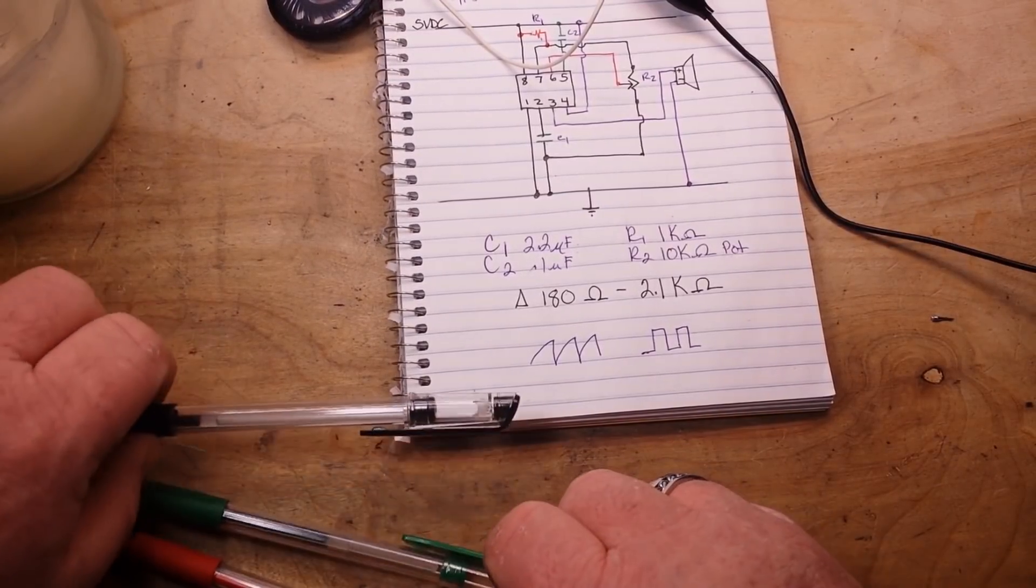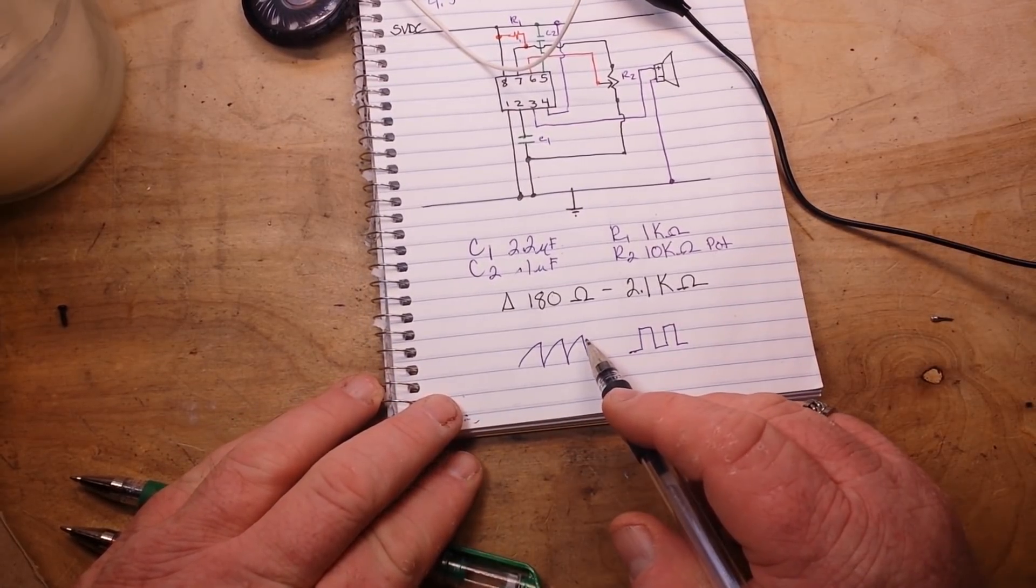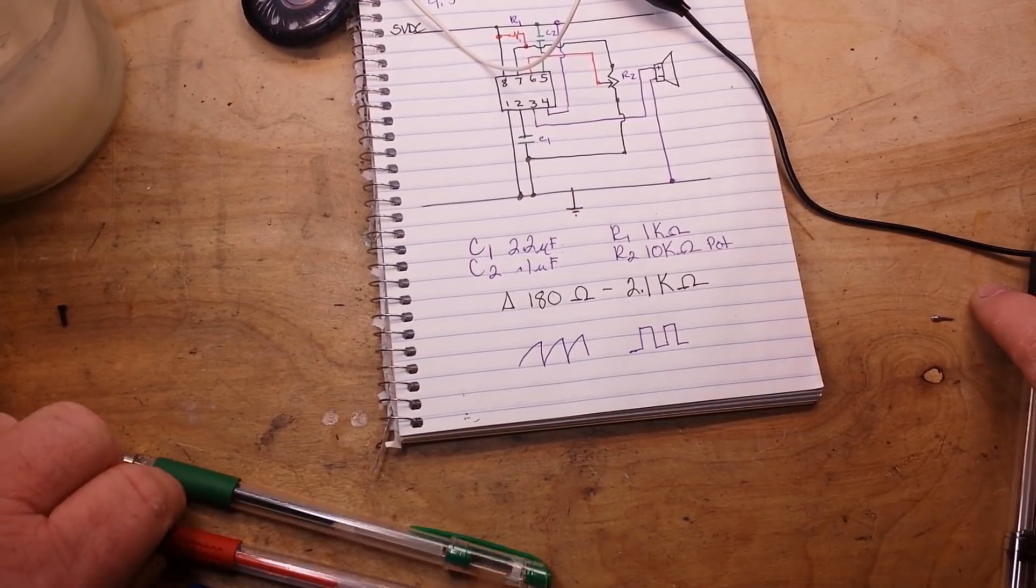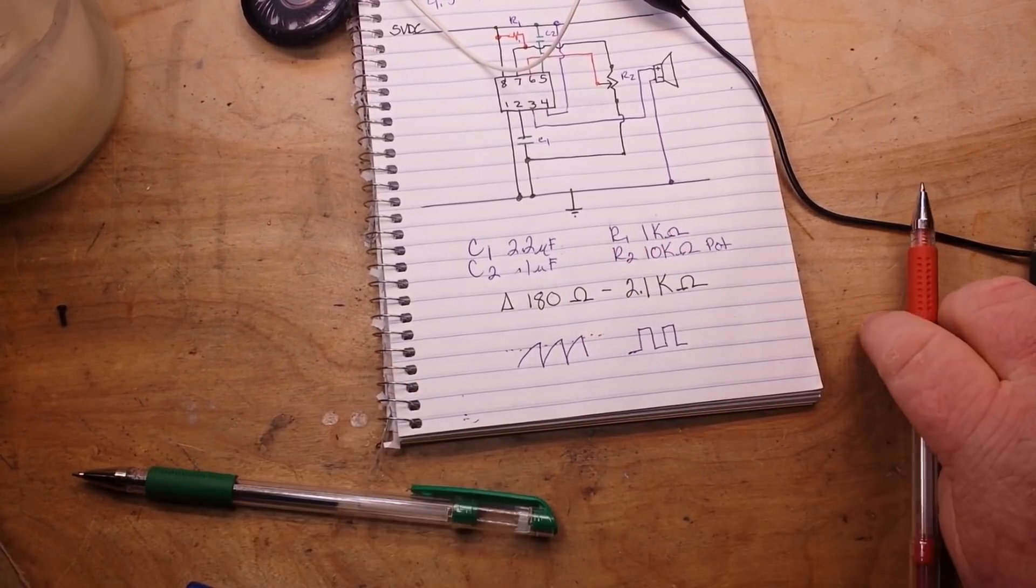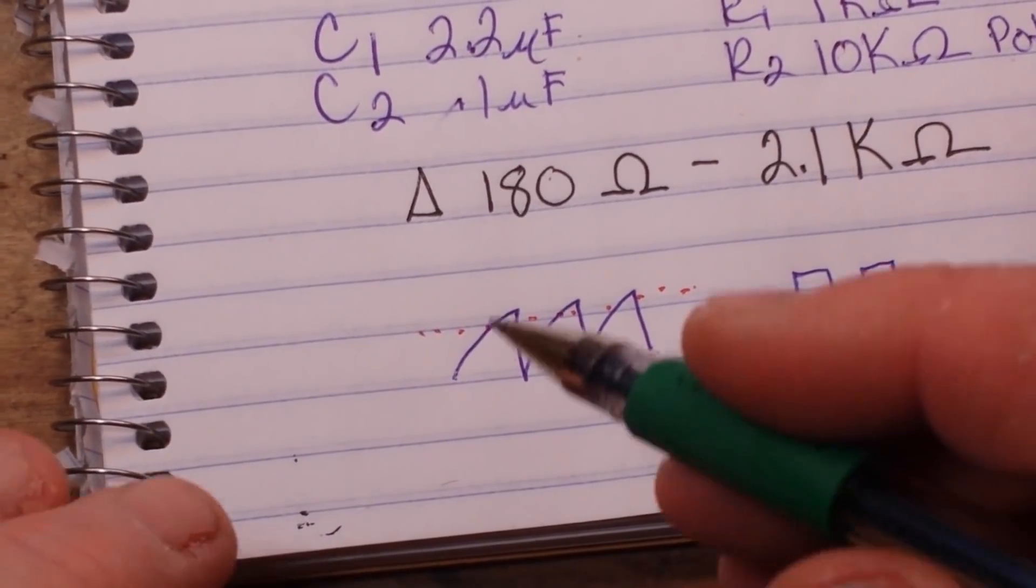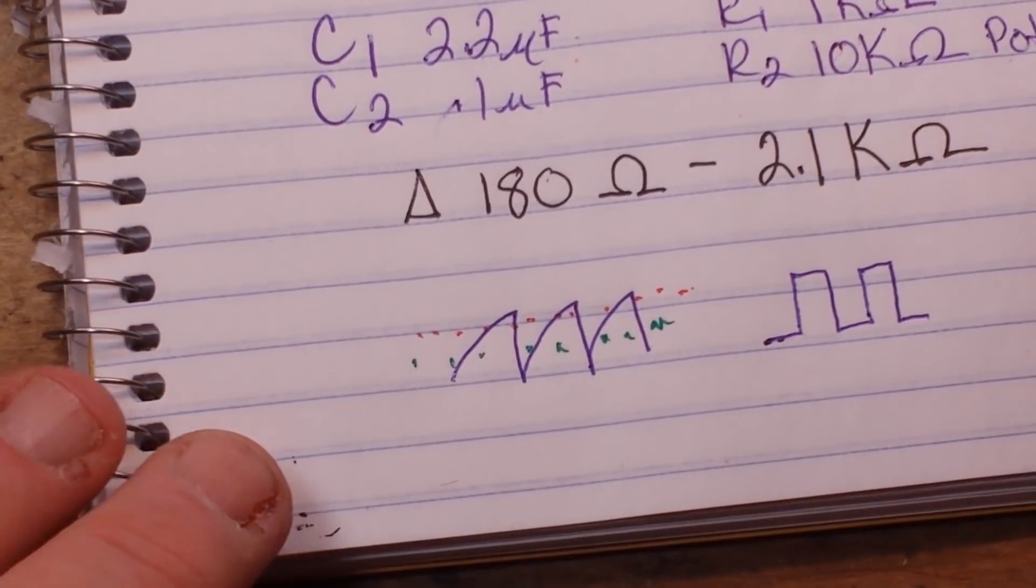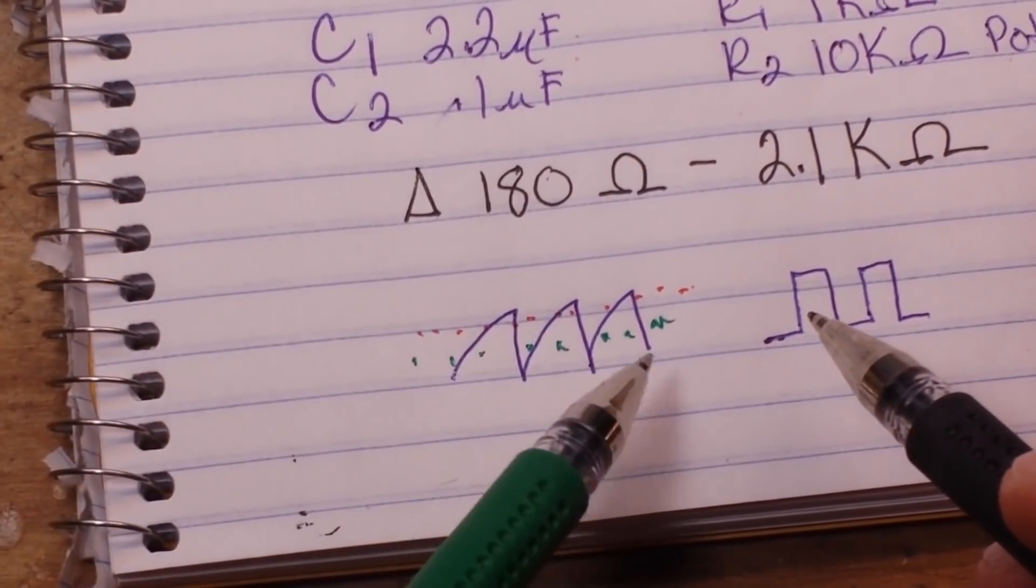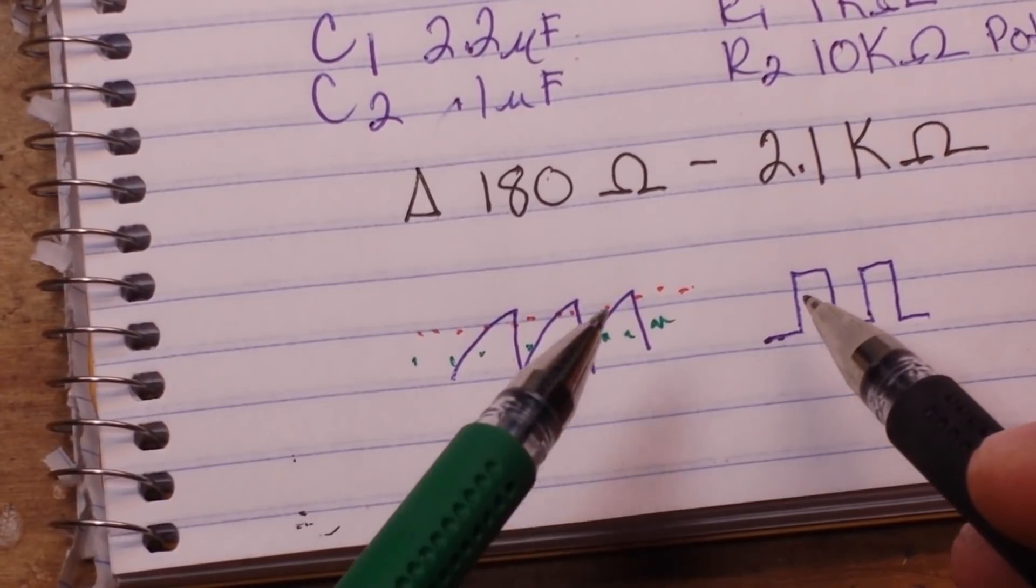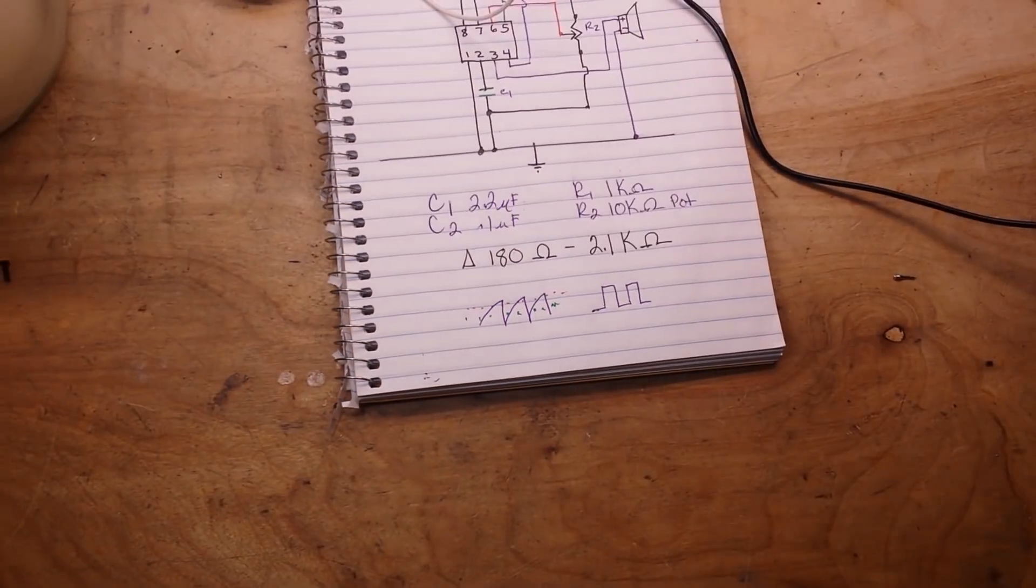In case you're unaware of a schmidt trigger, if we have our sawtooth waveform here, our capacitor charging and discharging, what the schmidt trigger does is it sets an upper threshold and a lower threshold of one-third and two-thirds VCC. So when the signal crosses the upper two-thirds the pulse goes high and when it crosses the bottom one-third the pulse goes low. So the schmidt trigger is basically an analog to digital converter.